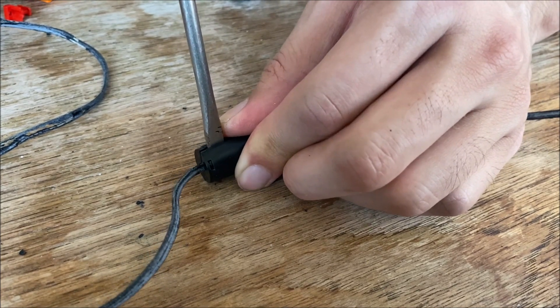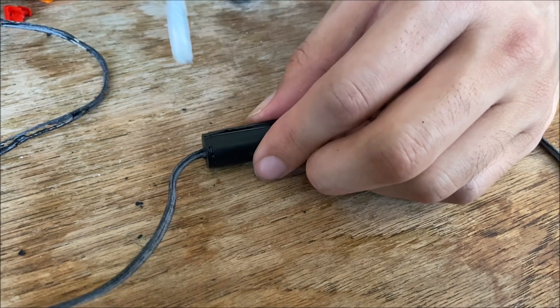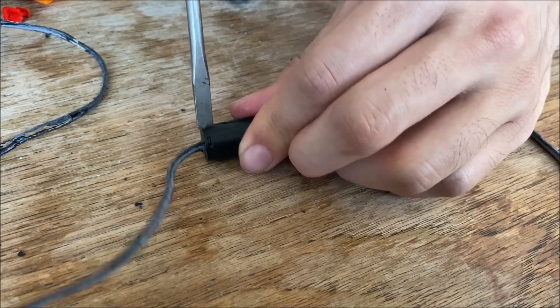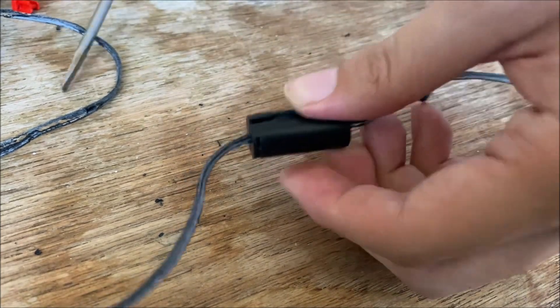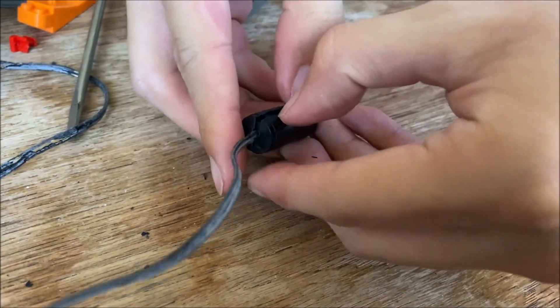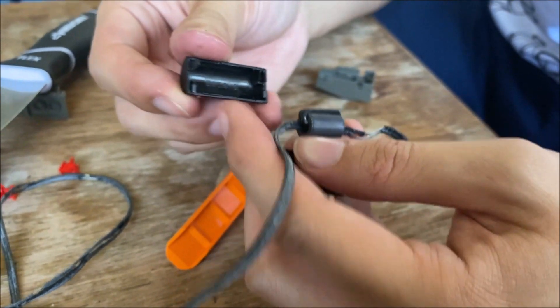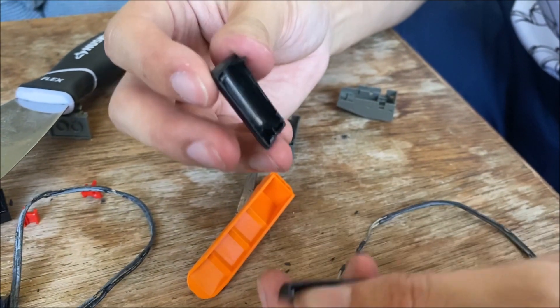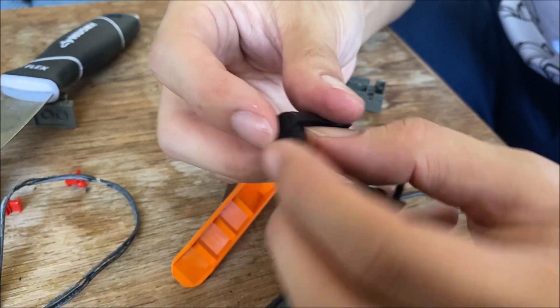If the connector was tough, the ferrule was even worse. Here you can see we pried it open from the side, but in the process we broke two of the tabs. In retrospect, I think the proper way to do this is to cut the wire and then try to pry it open from the ends where the wire goes in.